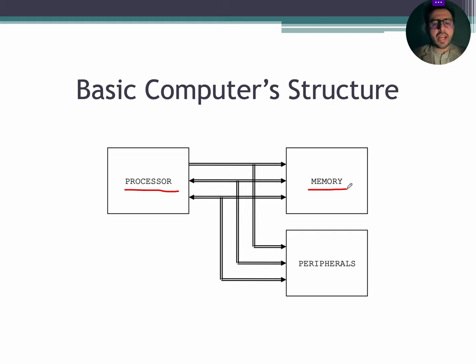Each cell has three functional terminals. First, select terminal for selecting a memory cell for a read or write operation. Second, control terminal to indicate the required operation, either read or write. Third, data in or sense terminal.